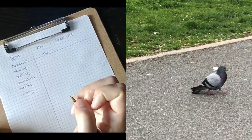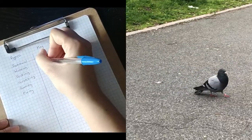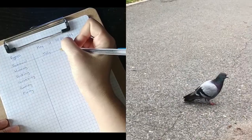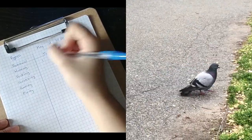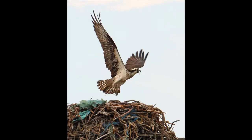Today, we're going to learn about how researchers observe animal behavior using a tool called an ethogram. Scientists who study animals use ethograms to describe and quantify animal activity. At Fresh Kills Park, we use ethograms to learn more about one of our favorite birds, the osprey.